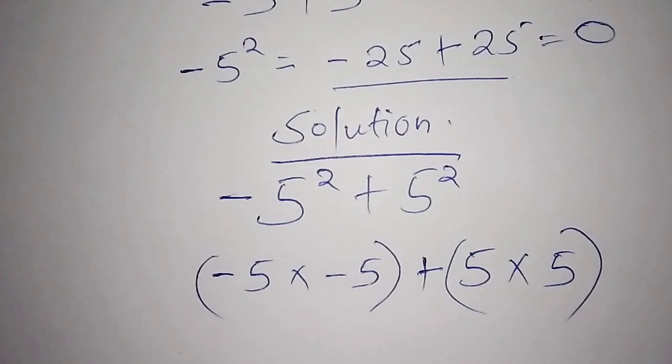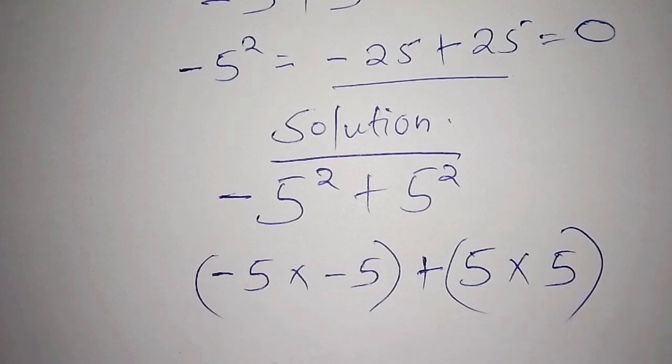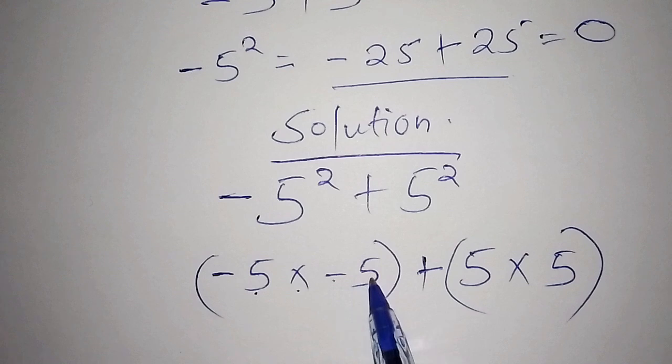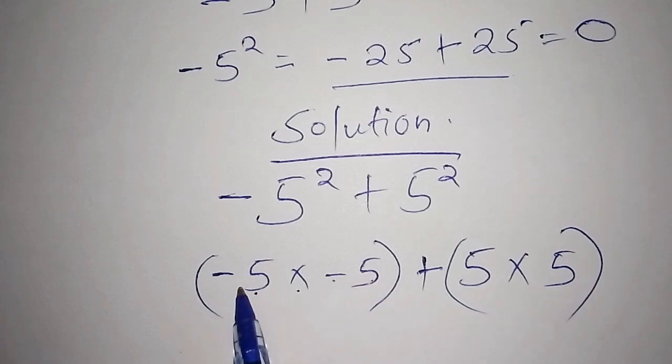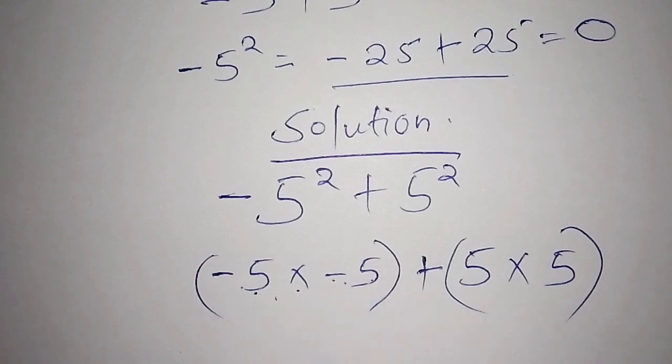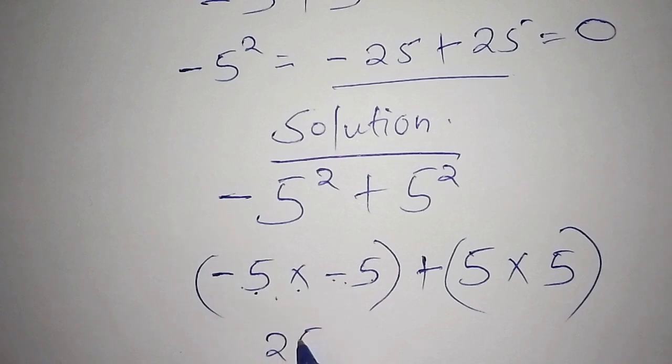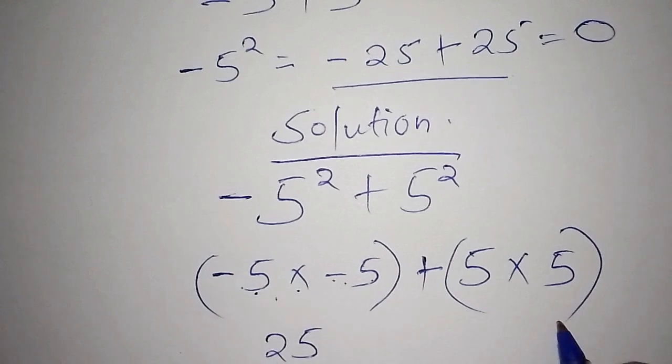When you open the bracket, minus 5 times minus 5, here is where the problem is. Any negative number multiplied by a negative number becomes a positive number, meaning that minus 5 multiply by minus 5 becomes positive 25, but not negative 25.